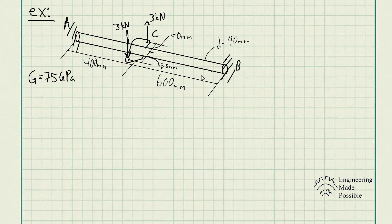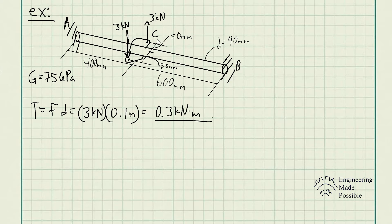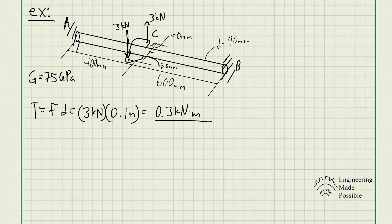The diameter of the shaft is 40 millimeters. The couple moment is applied at point C, which is 400 millimeters from A, and from C to B is 600 millimeters. The torque due to the couple moment is 0.3 kilonewton-meters. To solve for the couple moment, you have two equal and opposite forces, and the torque equals that force times the distance — or you can add both contributions since they act in the same direction, giving 0.3 kN·m.